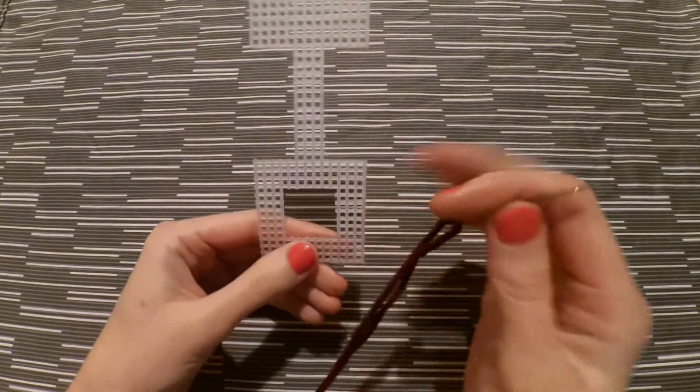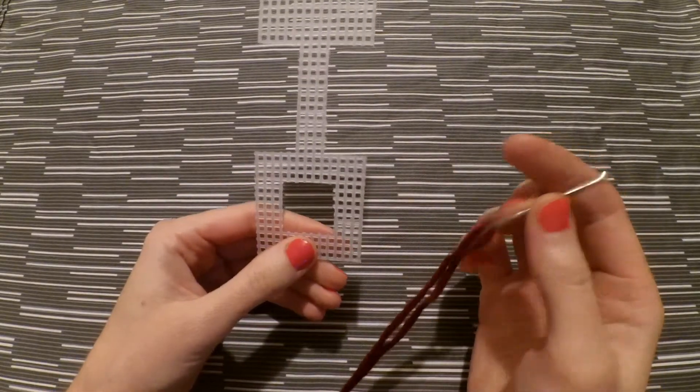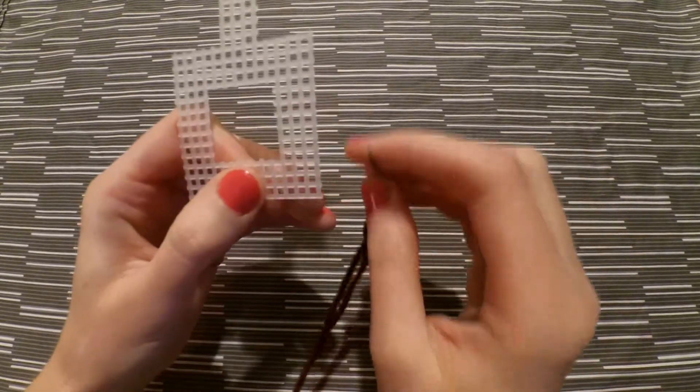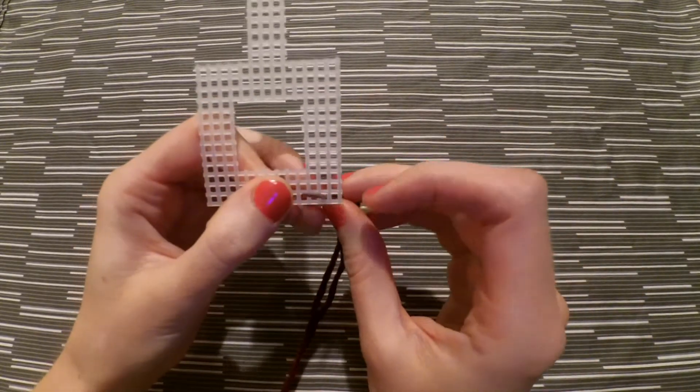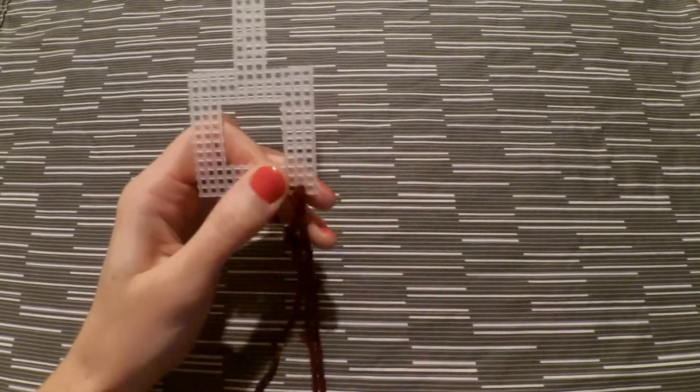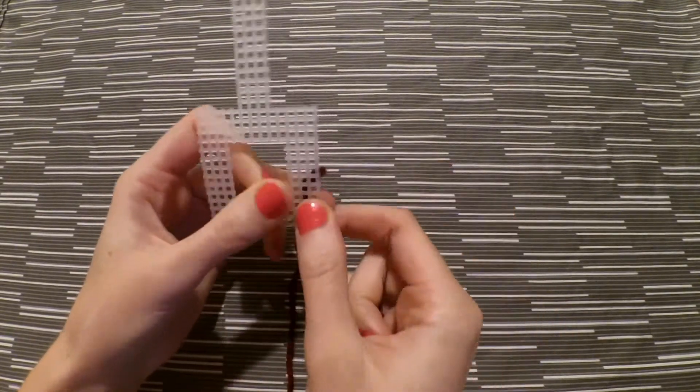Now you're going to thread your needle with your first color and bring your needle up through the second hole from the right in the first row. You'll need to leave about a one inch tail, making sure to wrap your first few stitches snugly around the tail.